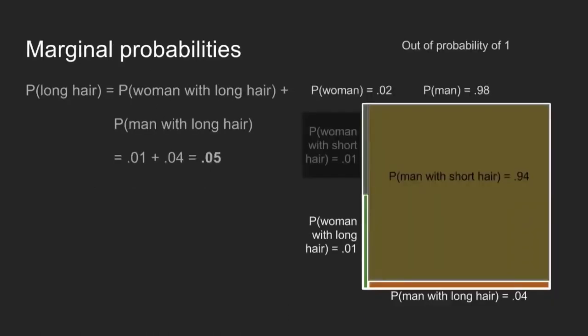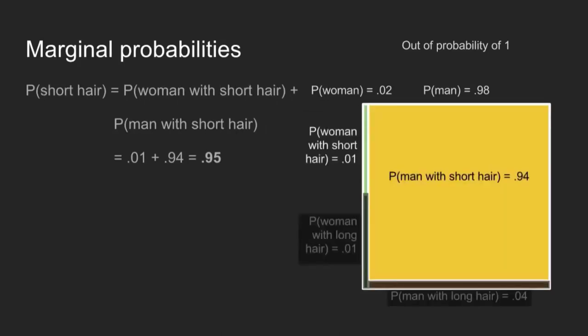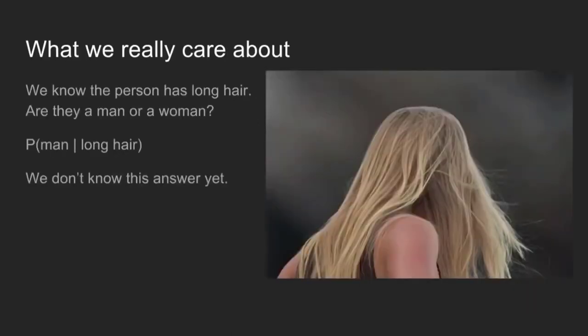Concept three: marginal probabilities. If I wanted to figure out the probability that someone has long hair, I just add up all the different ways that someone can have long hair. They can be a woman with long hair or a man with long hair. In the men's restroom line, that's a 1% probability plus a 4% probability, or a 5% probability overall. You can do the same thing for short hair: 95%. This last concept finishes our foundation. We can get to what we really care about.